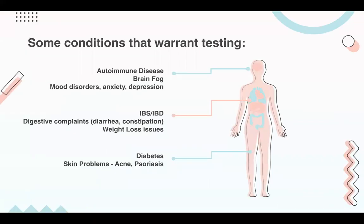What conditions warrant testing? There are a number of different conditions, including autoimmune disease, brain fog, and mood disorders including anxiety and depression. We're all aware of the brain-gut and gut-brain connection. The GI Map is also great for irritable bowel syndrome and inflammatory bowel disease, including ulcerative colitis and Crohn's, along with digestive complaints including diarrhea and constipation, weight loss issues, diabetes, and skin problems like acne and psoriasis. The GI Map can give you answers for many different complaints and symptoms, as each compartment of the body works together and influences each other.